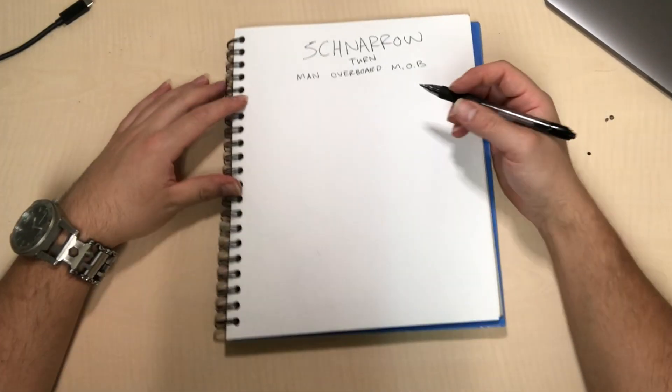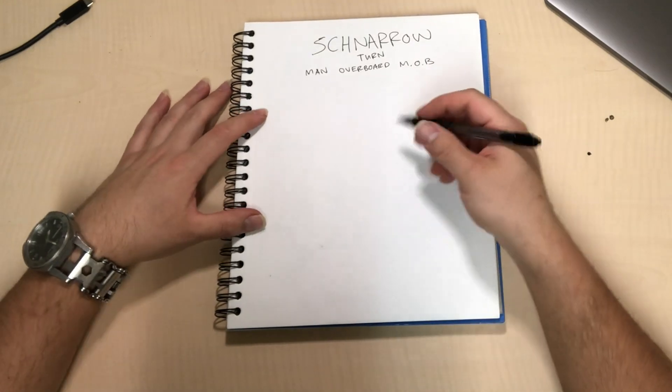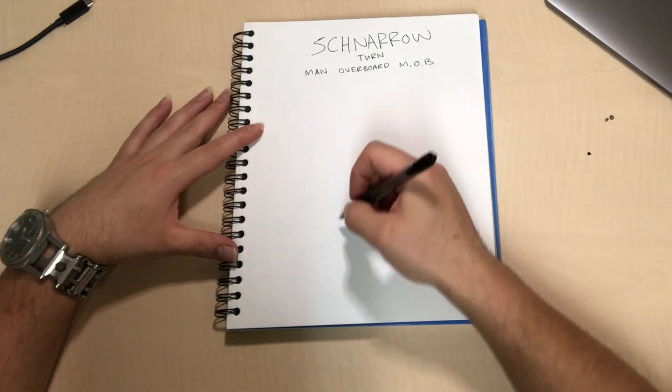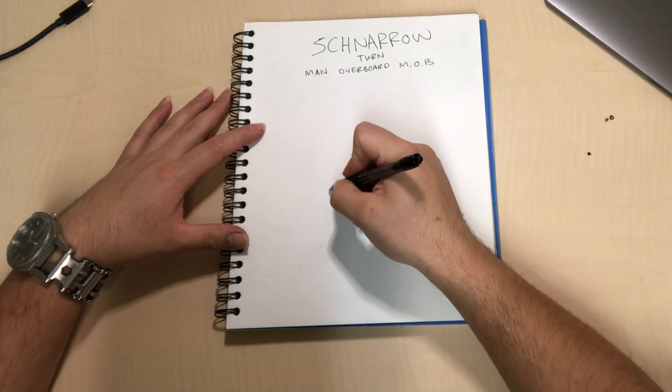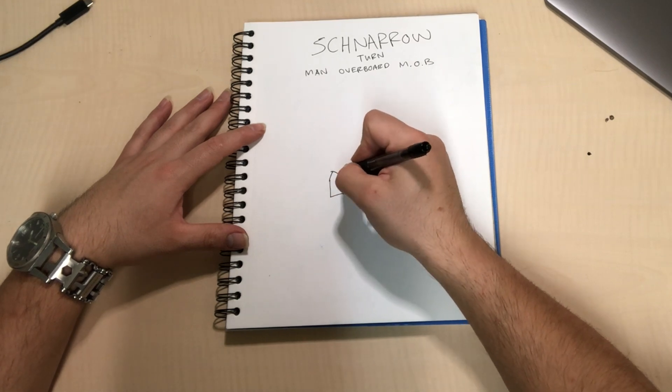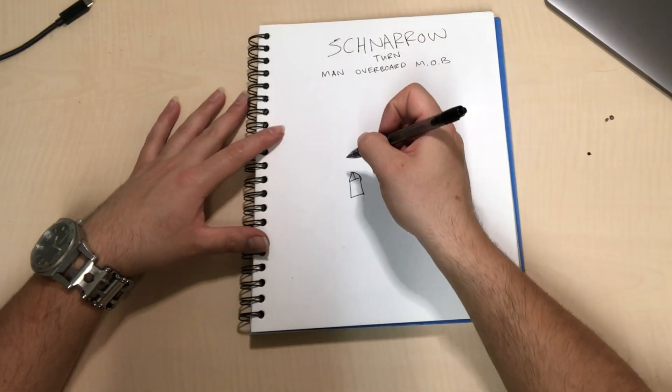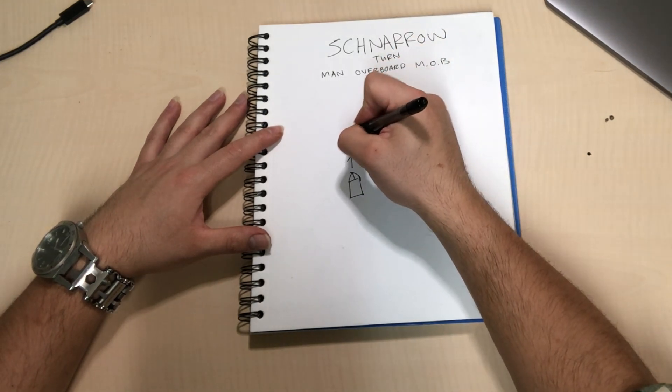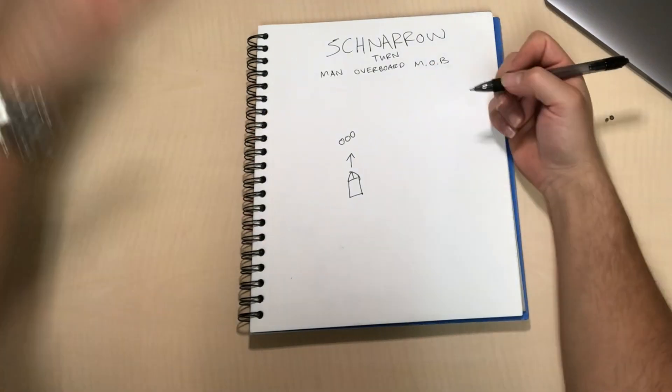Okay, so for the man overboard, we're gonna make this really simple and easy. We're going to say you are in a boat or a ship, and to make it super easy we're gonna say you are going zero zero zero degrees.